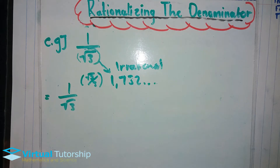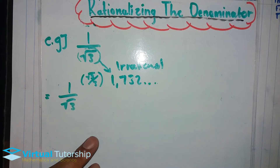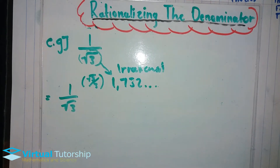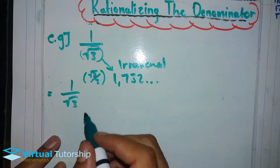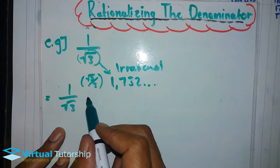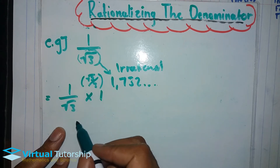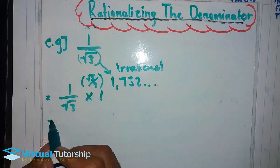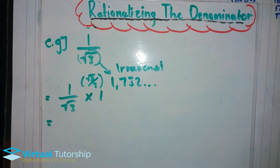Rationalizing the denominator is something important for an exam or a class test. We calculate it without using a calculator. So for instance, 1 over square root 3 — the first step is multiplying by 1. Because 1 times 1 over square root 3 is the same as 1 over square root 3.